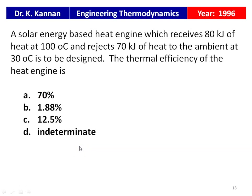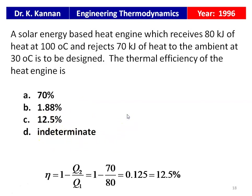From the 1996 question paper: a solar energy based heat engine receives 80 kJ of heat at 100°C and rejects 70 kJ of heat to ambient at 30°C. The thermal efficiency = 1 − Q2/Q1 = 1 − 70/80 = 0.125 = 12.5%. The answer is 12.5%.